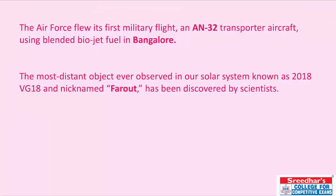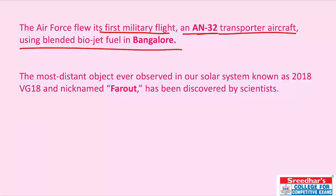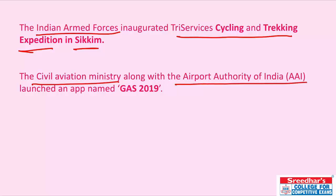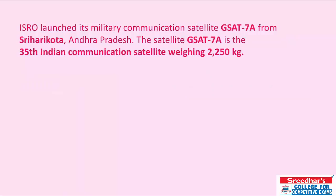The Air Force flew its first military flight on AN-32 transport aircraft using blended bio jet fuel in Bangalore. The most distant object ever observed in our solar system, known as 2018 VG18, was nicknamed 'Farout' and was discovered by scientists. A tri-services cycling and trekking expedition was held in Sikkim, inaugurated by the Indian Armed Forces. The Civil Aviation Ministry along with Airport Authority of India launched an application named GAS 2019. India launched its military communications satellite GSAT-7A from Sriharikota, Andhra Pradesh — the 35th Indian communications satellite, weighing around 2,250 kg.